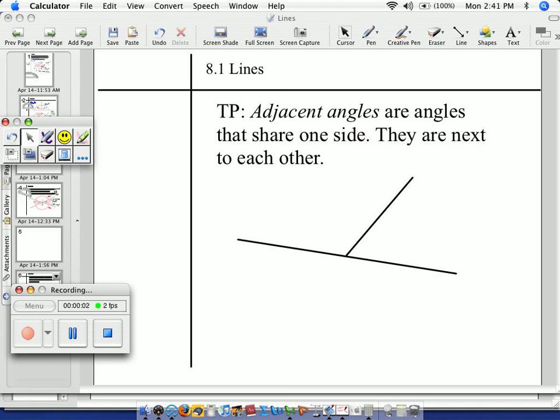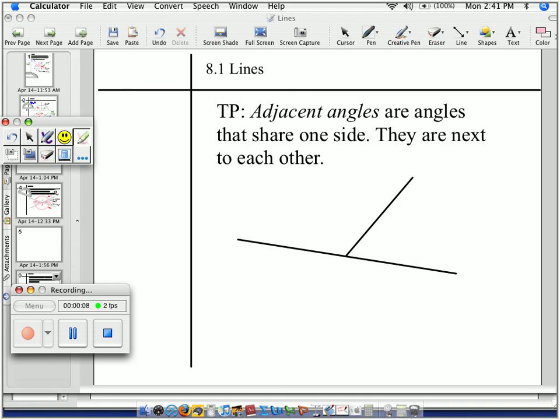Teaching point now, third one of the day. Adjacent angles are angles that share one side. They are next to each other.